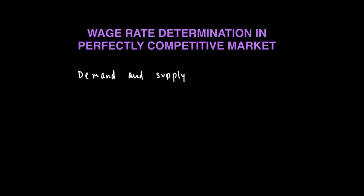After our discussion about demand and supply of labor, we are going to talk about wage determination. The first thing we look at is wage determination in a perfectly competitive market. In a perfectly competitive market, the demand and supply in the labor market will determine the wage rate as well as the employment level. Here we look at both the perspective of the individual employer as well as the employee.